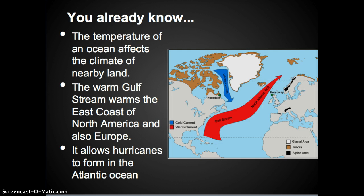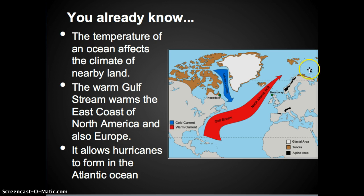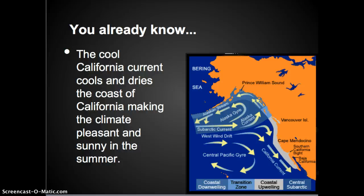You already know that the temperature of the ocean affects the climate of the nearby land. The warm Gulf Stream warms the East Coast of North America and also Europe, and it allows hurricanes to form in the Atlantic Ocean. In order for a hurricane to form, the ocean surface temperature needs to be about 26 degrees Celsius or 79 degrees Fahrenheit. The cool California current cools and dries the coast of California, making the climate pleasant and sunny in the summer.